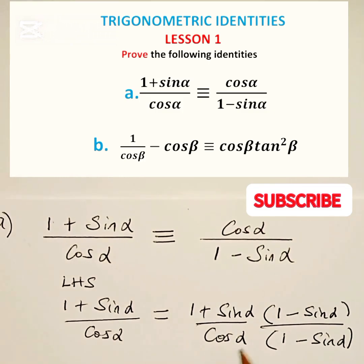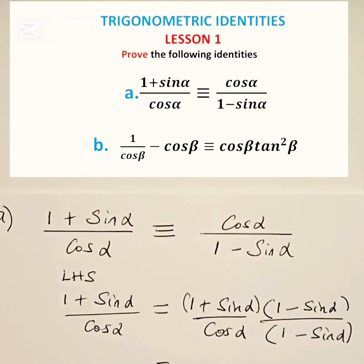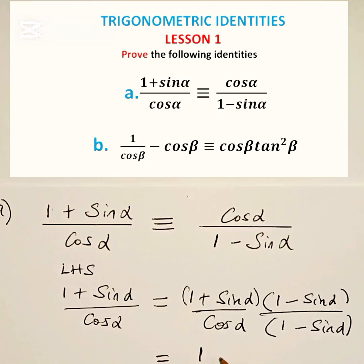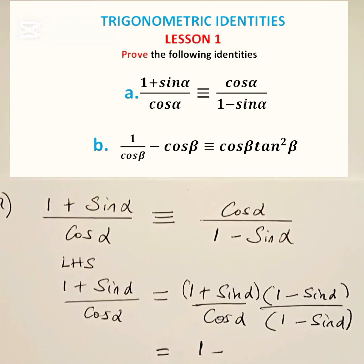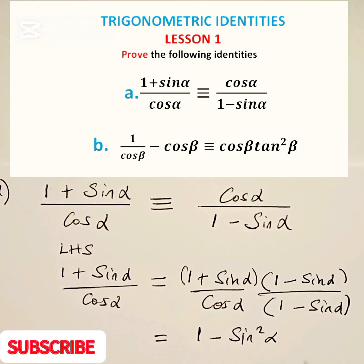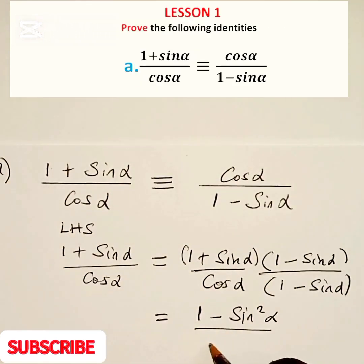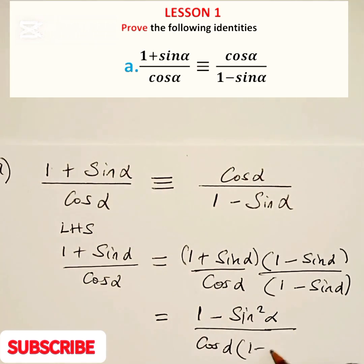Now let's expand what we have. If we apply these two, remember the difference of two squares. We are going to have 1 minus sin squared alpha divided by cos alpha times 1 minus sin alpha.